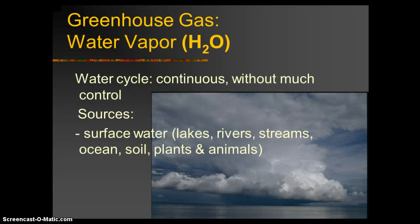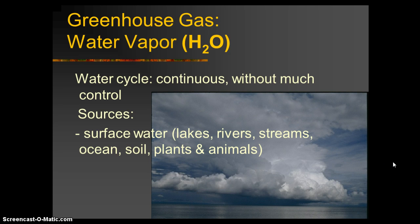Another greenhouse gas, one that's often overlooked because there's not much we can do about it, is water vapor — which is actually the biggest greenhouse gas there is. It absorbs energy and re-radiates it back down to Earth. Its sources are mostly natural: surface water areas including lakes, rivers, streams, soil, animals, and plants.